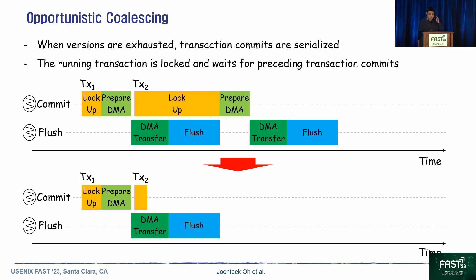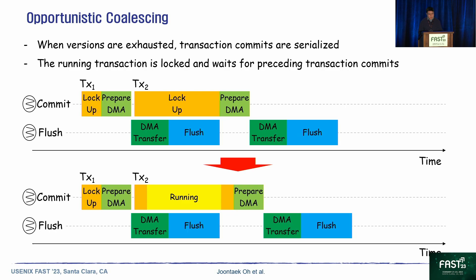So we propose opportunistic coalescing. In opportunistic coalescing, if a transaction is serialized in a locked state, it unlocks and changes the transaction state back to the running state. This allows file operations to be coalesced to the running transaction, increasing the number of coalesced file operations and ultimately increasing file system performance.